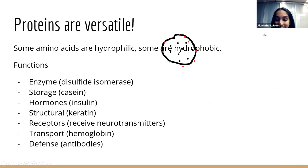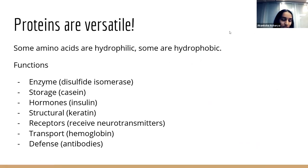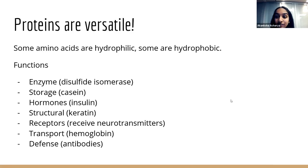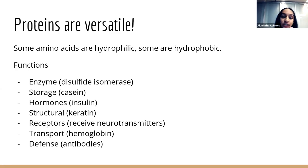Proteins are versatile — they're so versatile. Literally any function you can think of that your cells or body does is likely due to a protein. For example, an enzyme is a protein that allows a chemical reaction to occur faster than it normally would. Many chemical reactions at base level would take years to fully occur, so enzymes speed them up and allow different functions in our body — like breaking down waste in a cell.